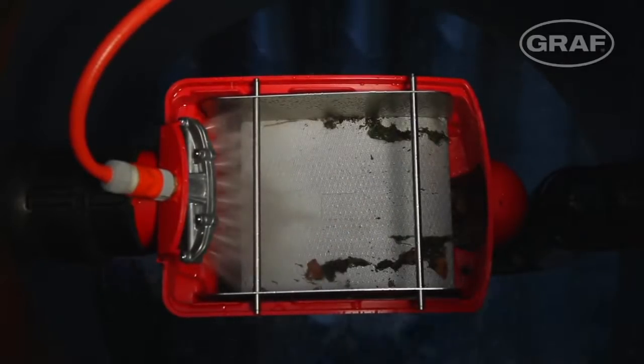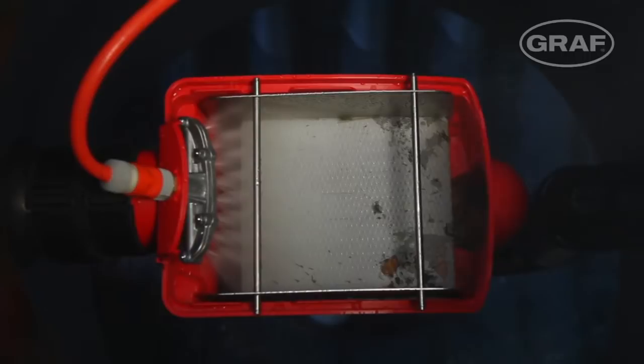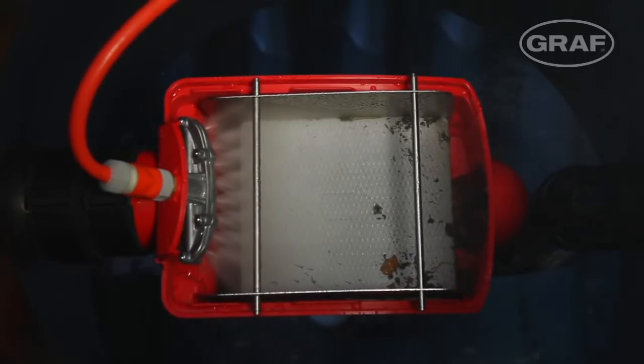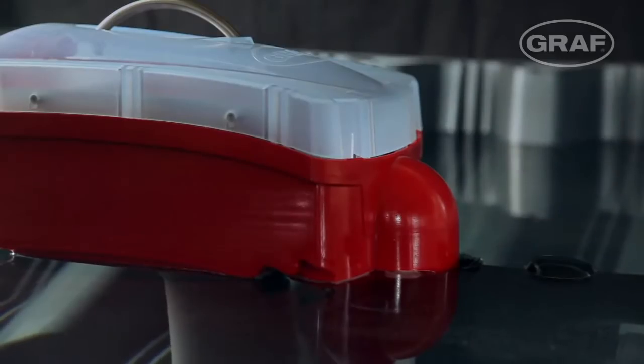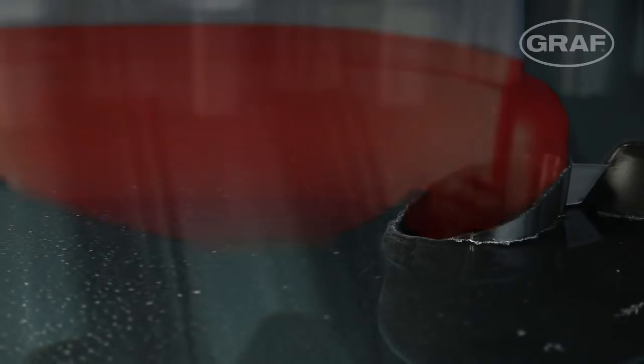The optional OptiClean cleaning unit automatically cleans the filter if required. The overflow siphon also regularly removes floating contamination such as pollen from blossom from the water surface.